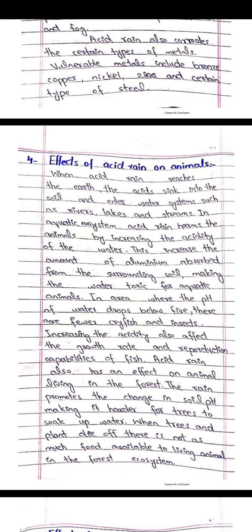Increasing the acidity also affects the growth rate and reproduction capabilities of fish. Acid rain also has an effect on animals living in the forest, affecting how it changes and depletes the soil.